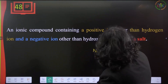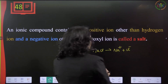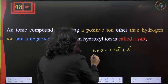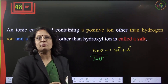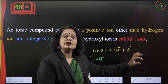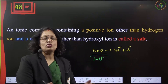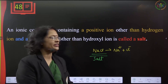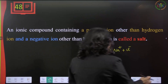An ionic compound containing a positive ion other than hydrogen ion and a negative ion other than the hydroxyl ion is called a salt. For example, sodium chloride (NaCl) is a salt — when it breaks, it gives Na⁺ and Cl⁻. This is also the table salt we use in food every day.